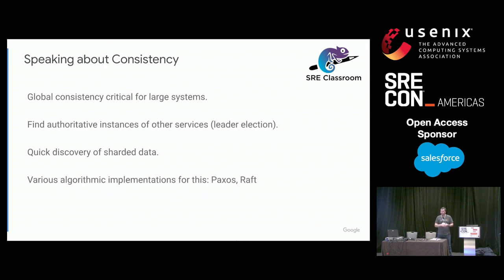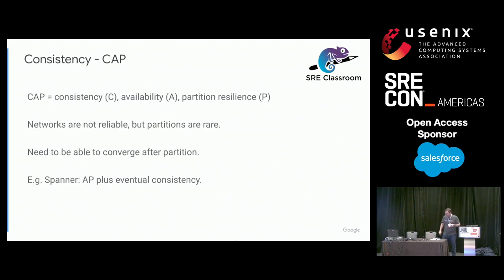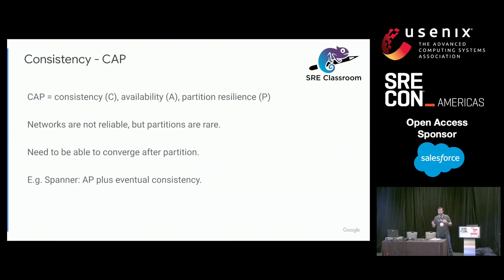Google uses a service called Chubby — there's a paper on it, and it's basically etcd. There's also Zookeeper. Using services like this to provide a globally consistent view of the world is critical for load balancers, service discovery, and all those parts of the system. Whenever we talk about this, we talk about CAP theorem: consistency, availability, and partition tolerance — pick two. Network partitions are rare but do happen. When they occur, can your service converge afterward? That's what partition tolerance means.